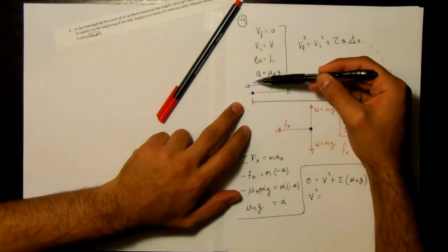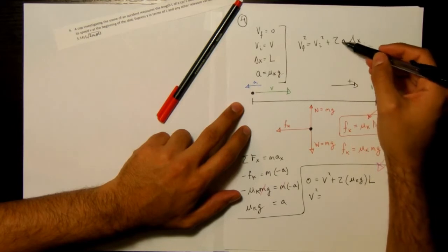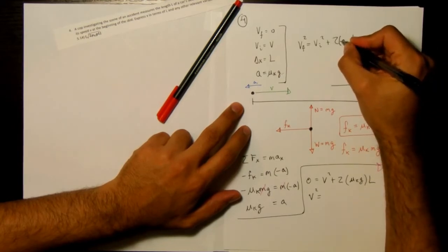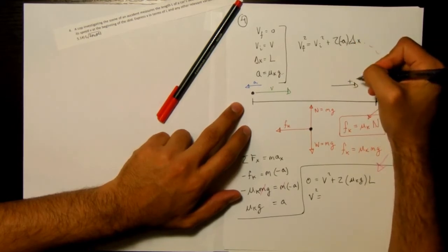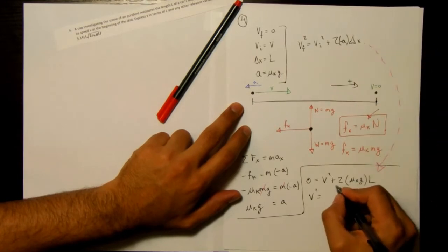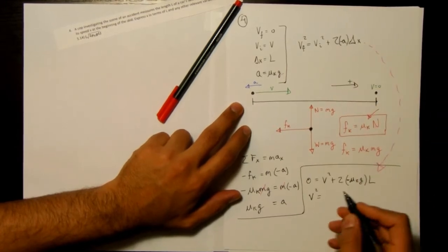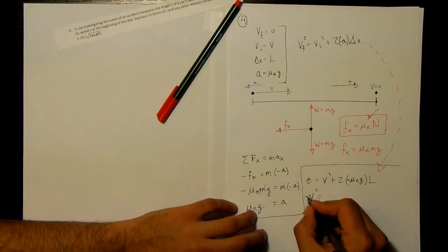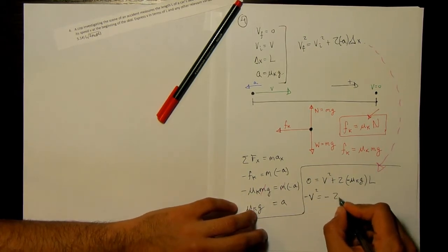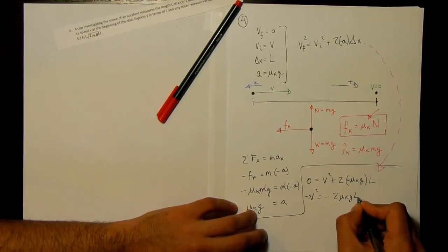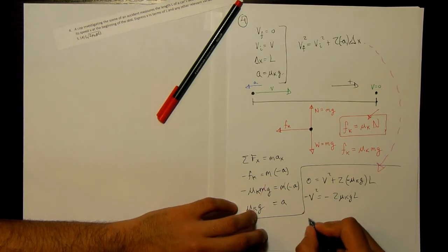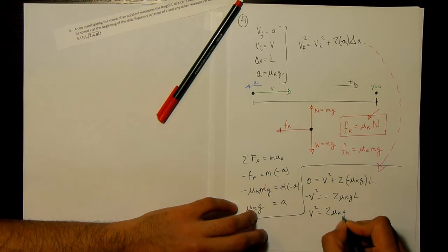The acceleration here is going to the negative direction, but I have it written as a. And so when I put it in here, this should be a negative a. Over here. So there should be a negative in front of here. And then finally, if I move this over, it's going to be negative. Negative 2 mu k g l. Negatives cancel. Mu k g l.